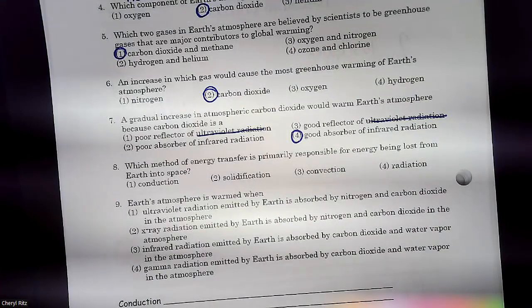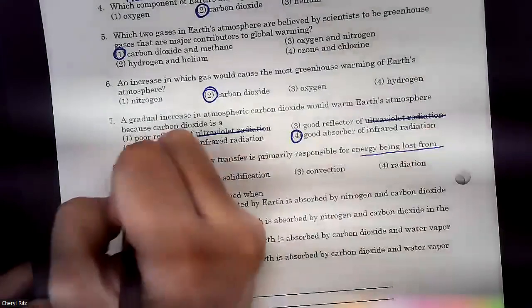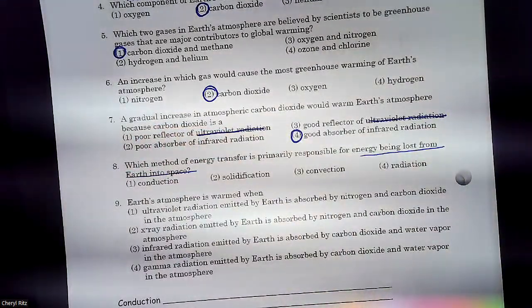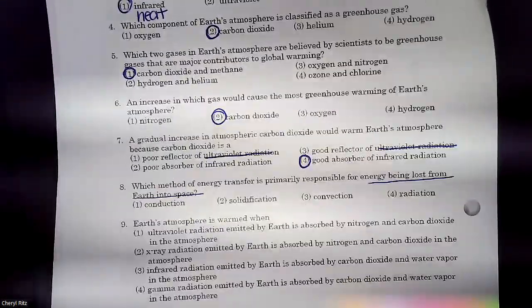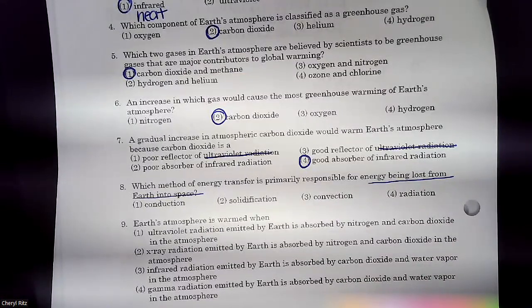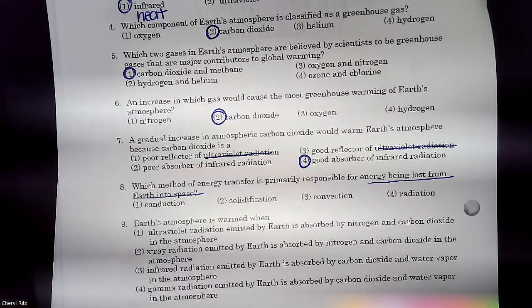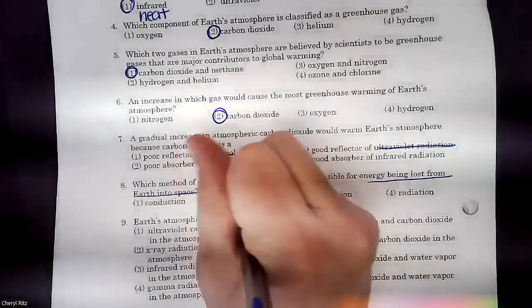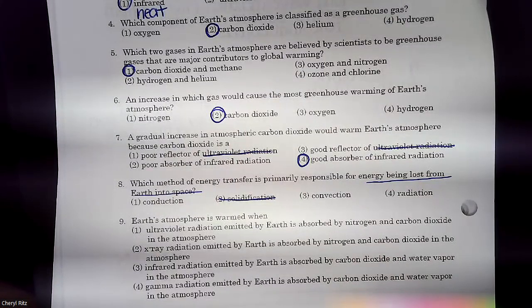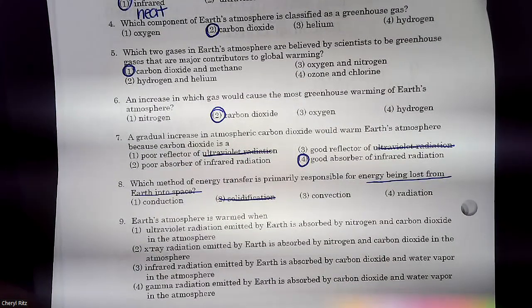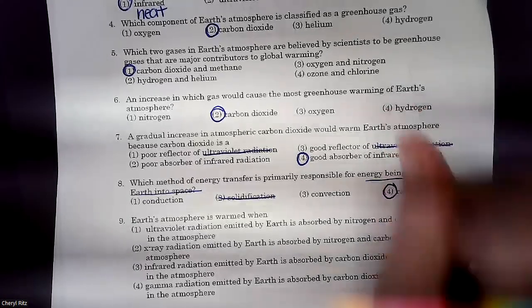Energy transfer responsible for heat energy being lost from Earth into space. When that heat is trying to leave space, is it doing it through conduction, solidification, convection, or radiation? Can we get rid of one without much thinking? Two. Solidification. What does that mean? It's hardening. It's becoming a solid. So that has nothing to do with energy transfer. So is it conduction, convection, or radiation that the heat is leaving Earth from? Yeah, because remember we called it, we said it was re-radiating heat.